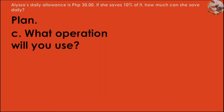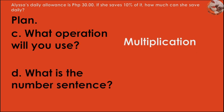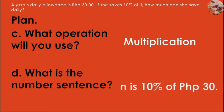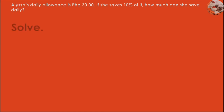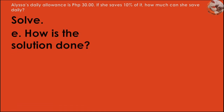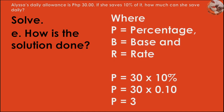Then plan — what operation will you use? Multiplication. What is the number sentence? N is 10% of 30 pesos. Next, solve — how is the solution done? P is percentage, B is base, and R is rate. P is equal to 30 times 10%. Change 10% to a decimal number, so P is equal to 30 times 0.10. Multiplying 30 times 0.10, P is equal to 3.